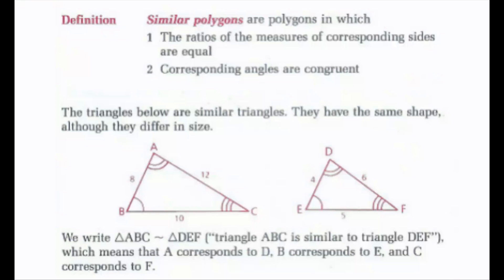Looking at our definition of similar polygons, similar polygons are polygons in which the ratios of the measures of corresponding sides are equal, and corresponding angles are congruent. So here we have two triangles below that are similar triangles. They have the same shape, but they differ in size.